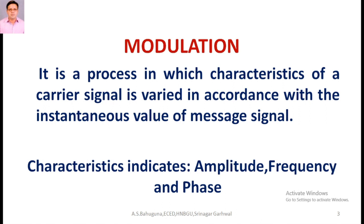The same technique is used in the case of modulation. So in the modulation process, the baseband signal is called the modulating signal and another higher frequency signal is called the carrier signal. The carrier signal has the higher frequency and the message signal has the lower frequency. The carrier signal carries the modulating signal to the destination. The modulation can use an analog modulating signal or it can be a digital modulating signal.